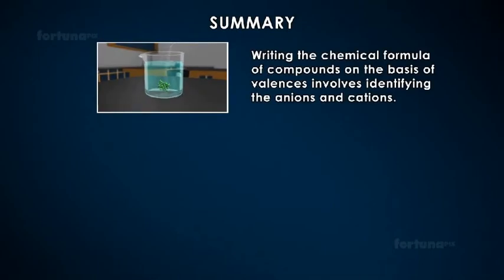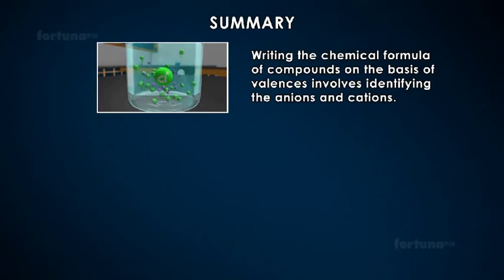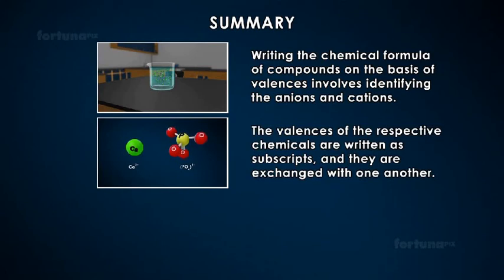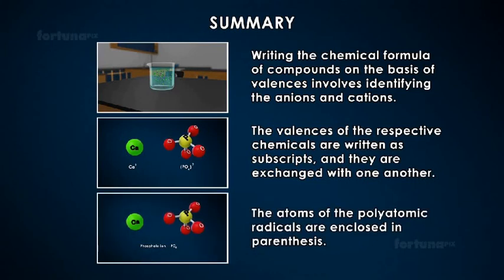Summary: Writing the chemical formula of compounds on the basis of the valences involves identifying the anions and cations. The valences of the respective chemicals are written as subscripts and they are exchanged with one another. The atoms of the polyatomic radicals are enclosed in parentheses.